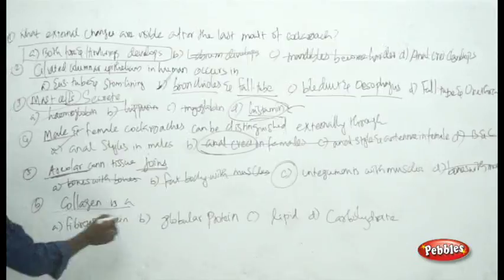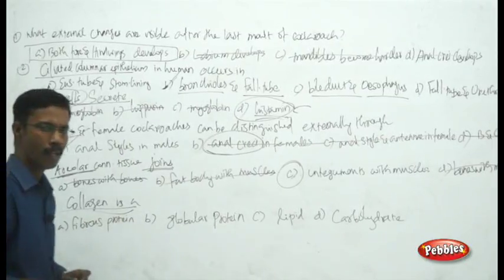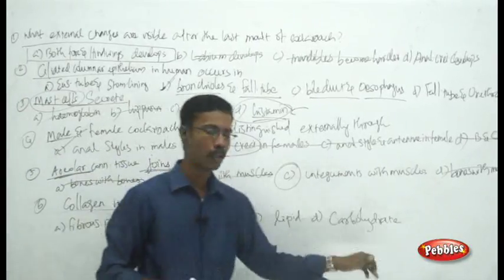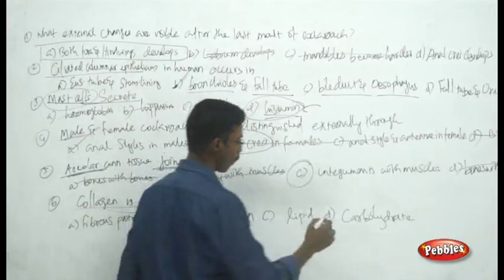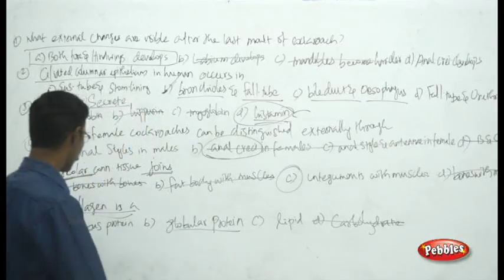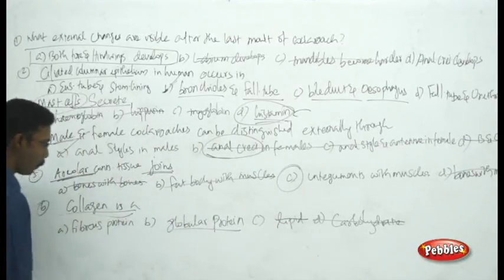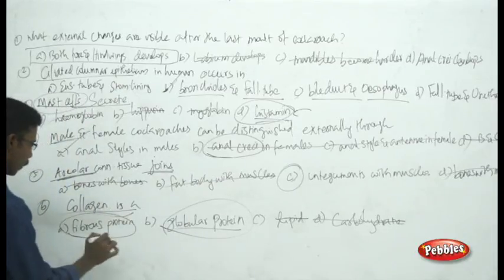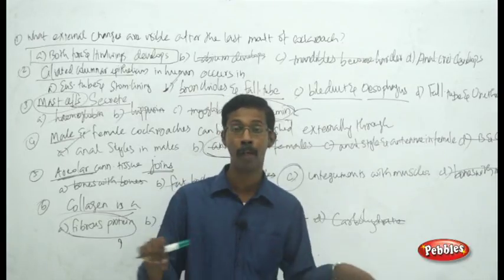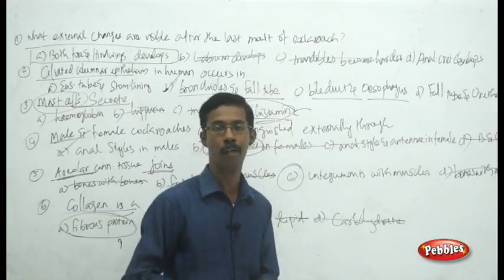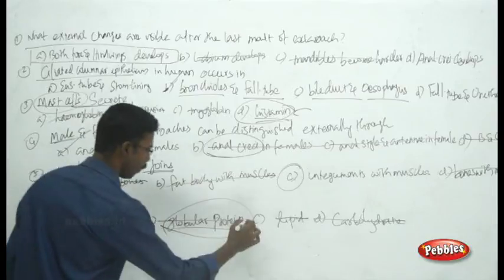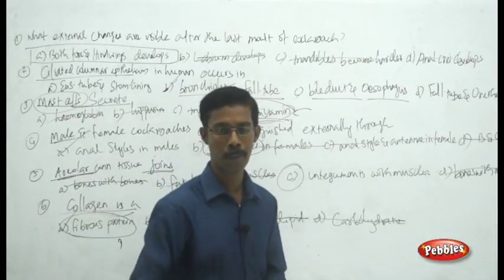The last question: collagen is which type of macromolecule? Choices are fibrous protein, globular protein, lipid, and carbohydrate. Eliminate carbohydrate and lipid — collagen is a protein. Between globular and fibrous, collagen makes up strong, flexible, elastic fibers of muscles. The answer is collagen is a fibrous protein.